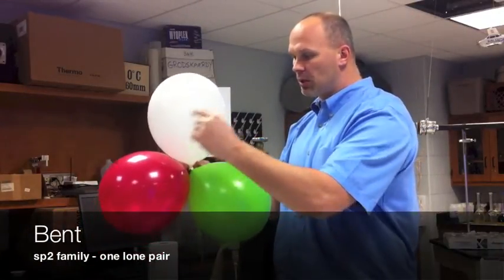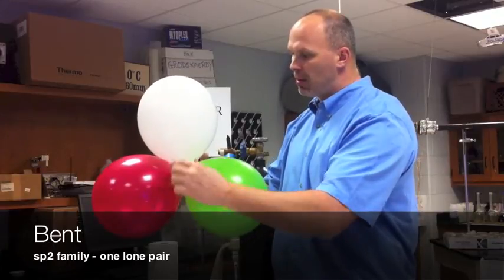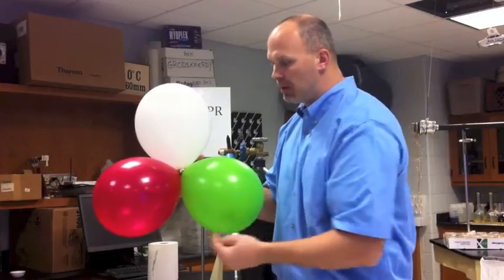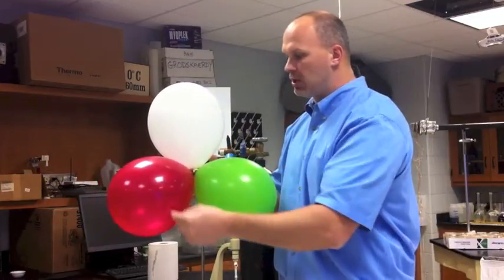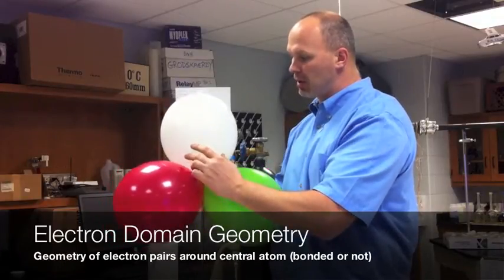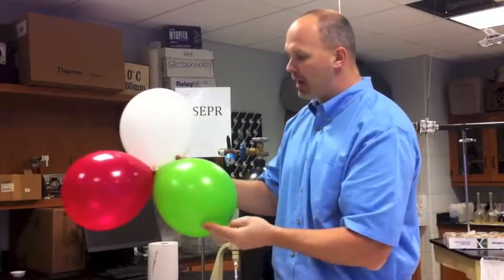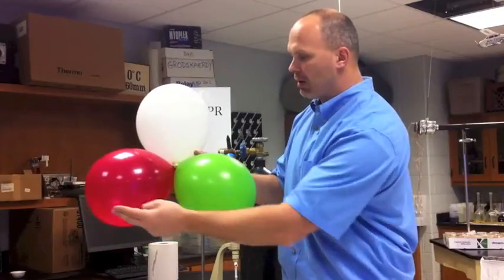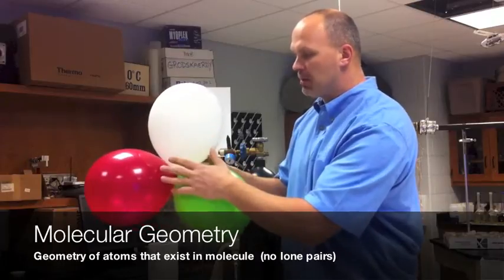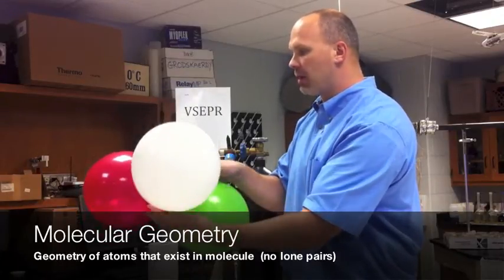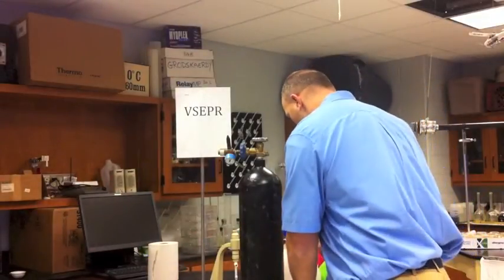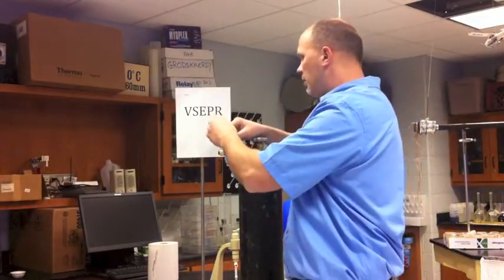You can see that it's still a trigonal planar shape, but we would call it bent if things are actually bonded here. So there's a geometric shape, and then there's the electron domain shape. Electron domain shape is always trigonal planar because three pairs of electrons will repel themselves into the shape, but you're going to have now a shape here that's due to just atoms. If two atoms are bonding here in a lone pair, this would be bent. So bent and trigonal planar are the two shapes in SP2 hybridization.